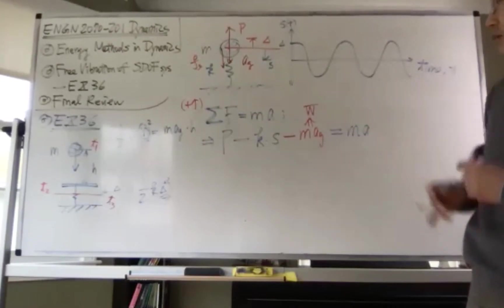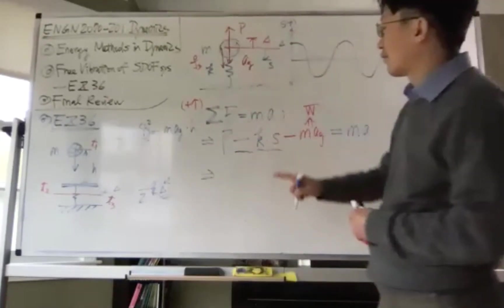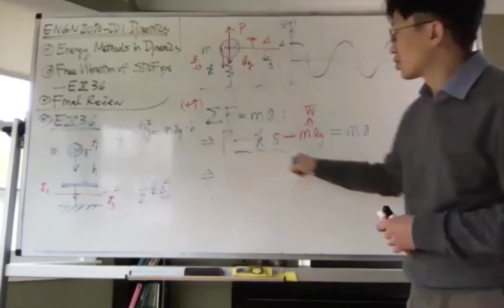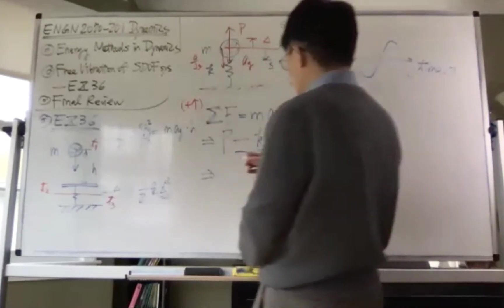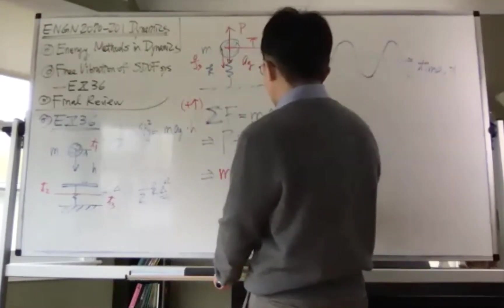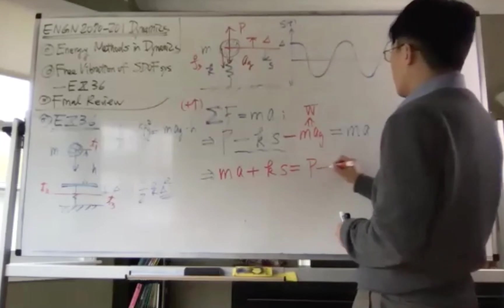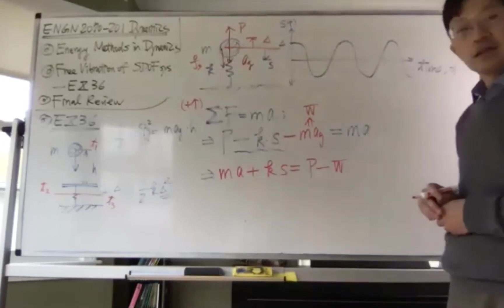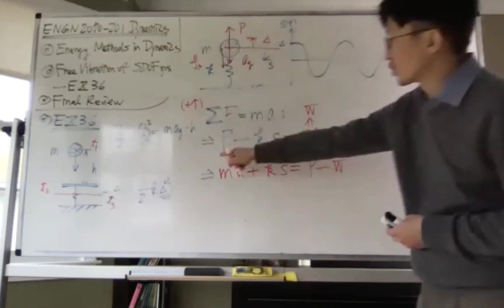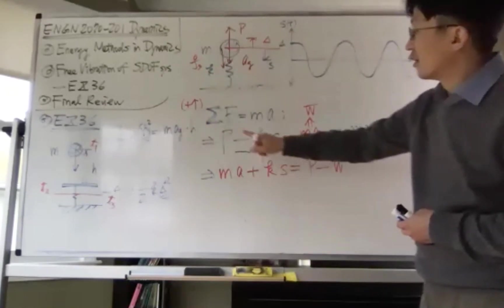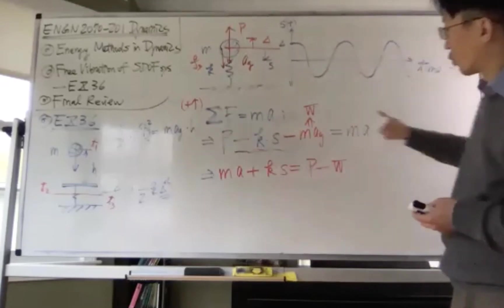Now we can actually rearrange signs. We can rearrange signs by moving the Ks from the left-hand side to the right-hand side and keep the other two. On one side, I just swap these two. So the governing equation actually becomes this. It becomes mass times acceleration plus spring constant times displacement equals to P minus weight. I just move this P minus M times g. I just swap these two. By moving my negative Ks from the left-hand side to the right-hand side, so it becomes positive.